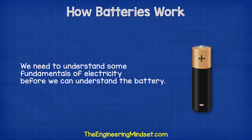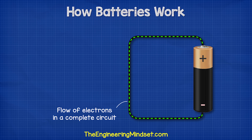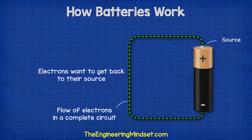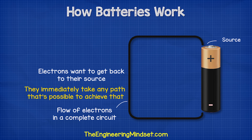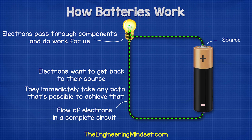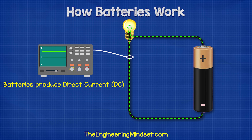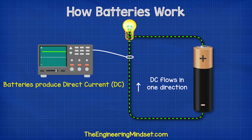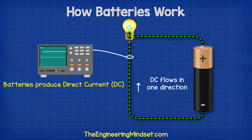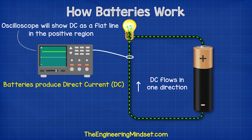We need to understand some fundamentals of how electricity works before we can understand the battery. Electricity is the flow of electrons in a circuit. Batteries provide the pushing force that moves electrons through the circuit — the electrons want to get back to their source and will take any available path. By placing things such as lamps in the way, we can force them to do work for us. Batteries produce DC electricity, or direct current, meaning electrons flow in just one direction — from negative to positive. An oscilloscope will show DC as a flat line in the positive region.